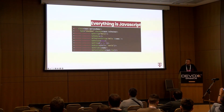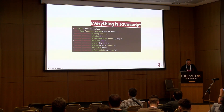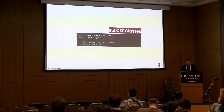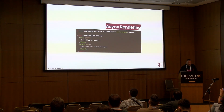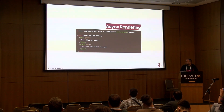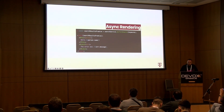Everything is JavaScript — all attributes can use objects, they can use arrays. Every attribute is just JavaScript in Marko. You can simply set CSS classes like this, which is really nice. And last but not least, async rendering is done like this: you use the await tag in order to specify the logic of your component when it is not synchronous.